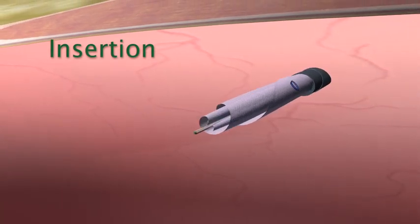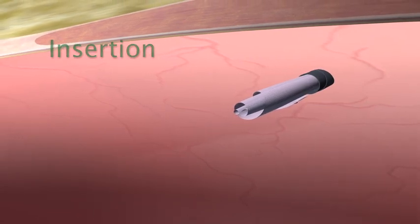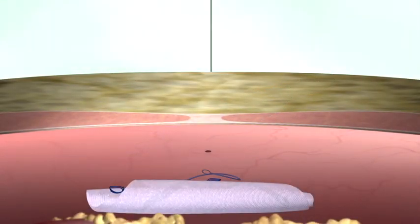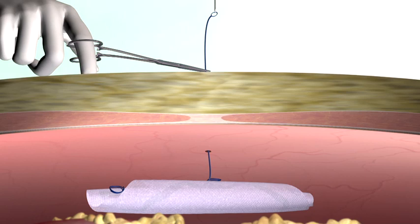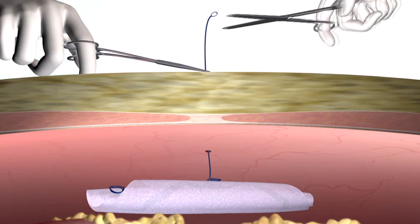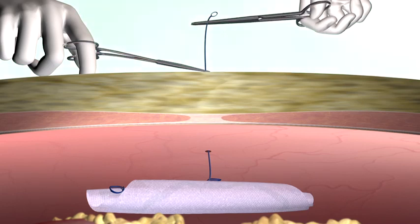Once the mesh is inserted into the abdomen, a suture passer is used to locate the inflation tube and the tube is pulled up through the center of the hernia defect. The inflation tube automatically centers the mesh over the defect, eliminating the time and effort involved with the placement and retrieval of orientation sutures.